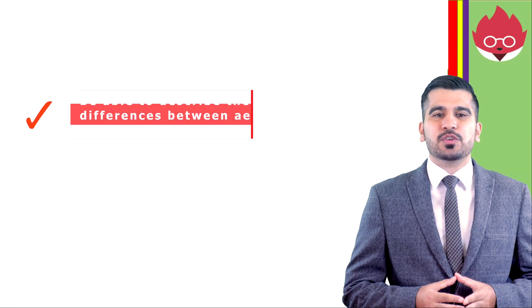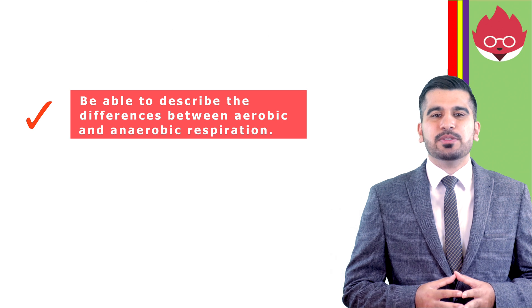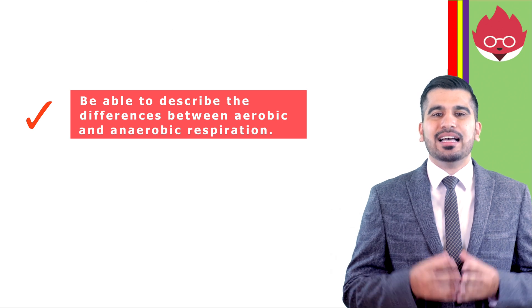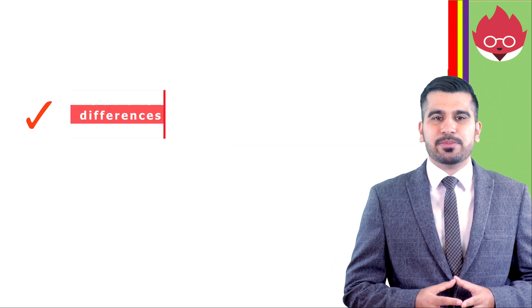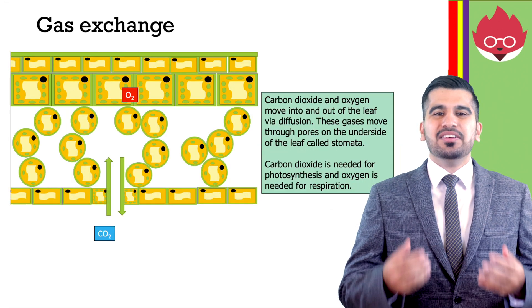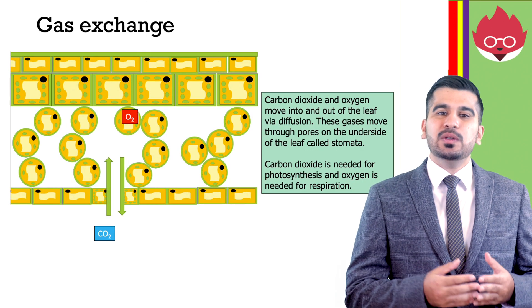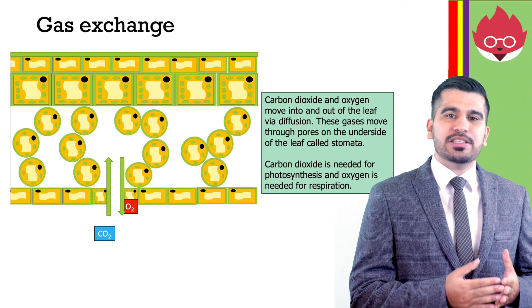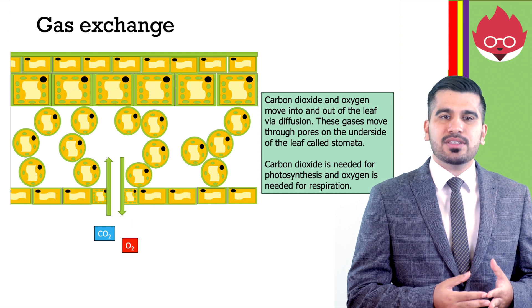By the end of the lesson, you should be able to describe the differences between aerobic and anaerobic respiration. In our next lesson, we will look at gas exchange and flowering plants, which will include the structure of the leaf and the role of the stomata.